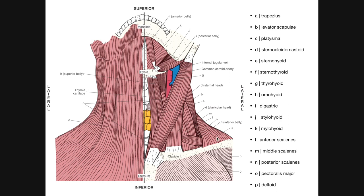Letter A right here — this isn't part of the anterior neck per se, but that's our trapezius muscle. The trapezius has some insertion on the clavicle, but it's also going to mainly insert on the scapula posteriorly. Letter B is levator scapulae. It originates on some of the upper cervical vertebrae, descends down, and inserts on the superior part of the medial border of the scapula — it elevates the scapula.